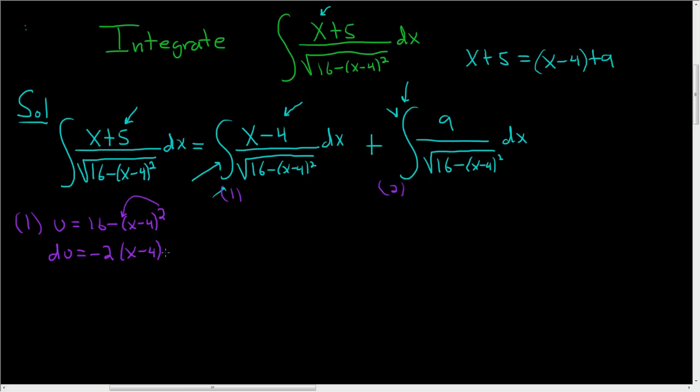Well, the derivative of x is simply 1. And then we have the dx. Now we don't have a negative 2 here in the integral, so we'll divide this by negative 2. And so this becomes negative 1 half du equals x minus 4 dx.